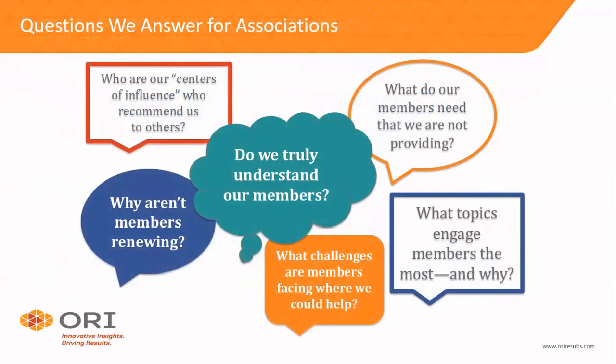The kinds of high-priority research questions we're answering include: Who are our centers of influence who are recommending us? What do members need that we're not providing? What topics engage members the most and why — especially important in today's virtual conference environment? What challenges are facing members where we could help? And why aren't members renewing? That's the essence of what we're going after here.